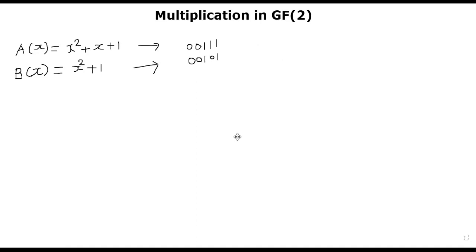The question now is how do we multiply these two polynomials? We multiply by looking at the least significant bit. The least significant bit is turned on, which means we will first take whatever we have in the current B and put it as part of the result, because 1 times (x² + 1) is x² + 1, and we will have it as part of our result.